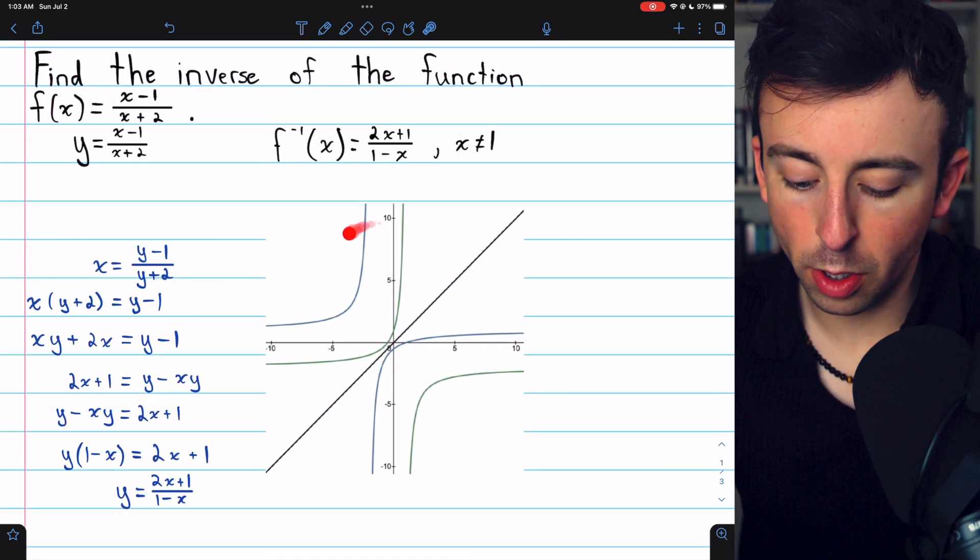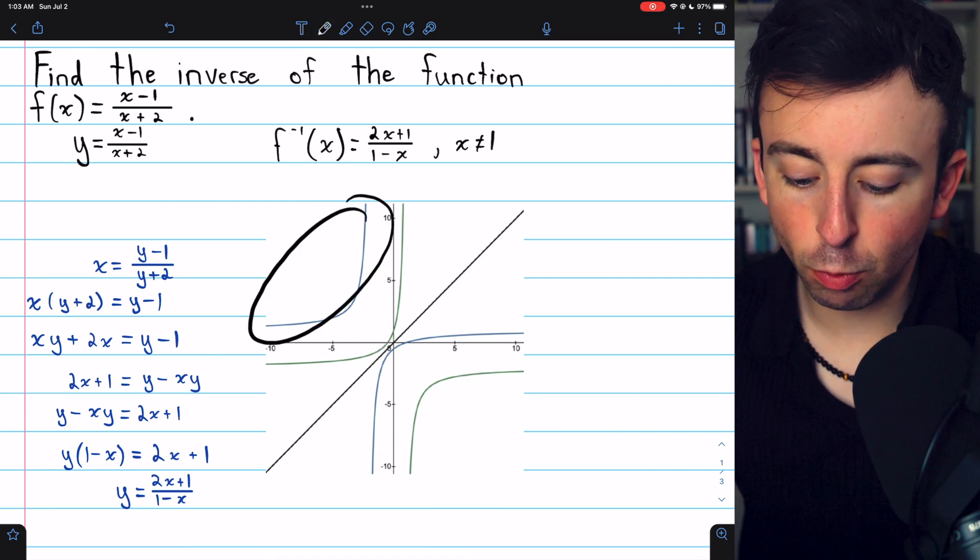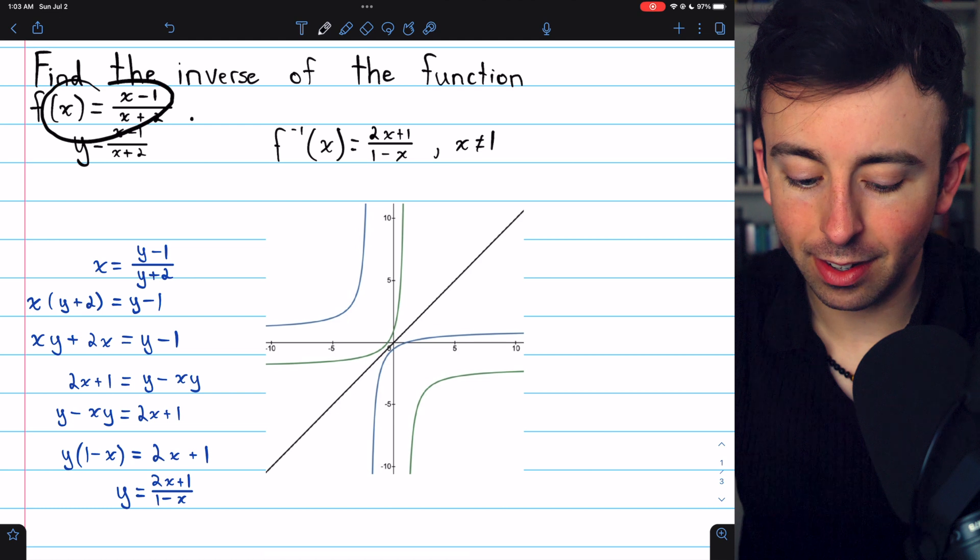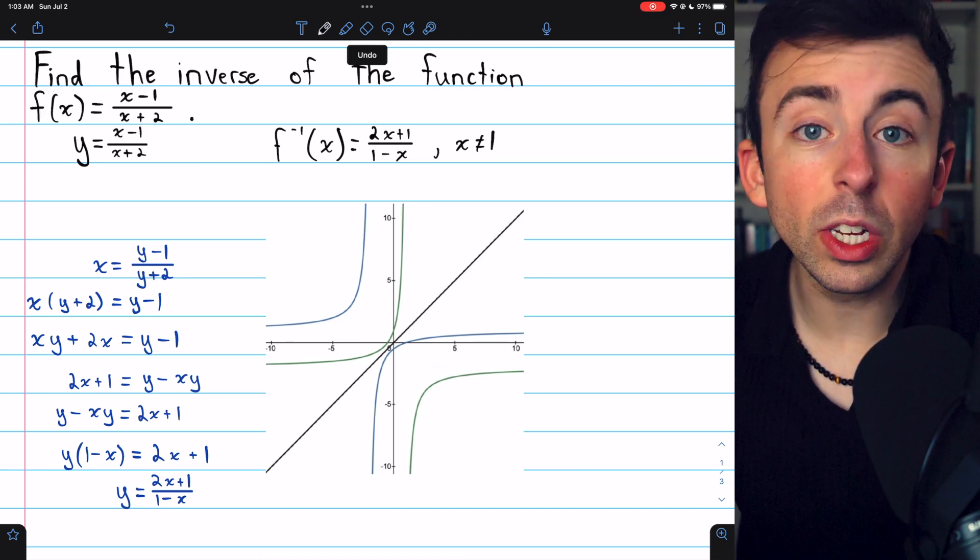And here is, since I'm sure you're curious, a graph of the situation. The blue curve is the original function, f of x. The green curve is the inverse function that we just figured out.